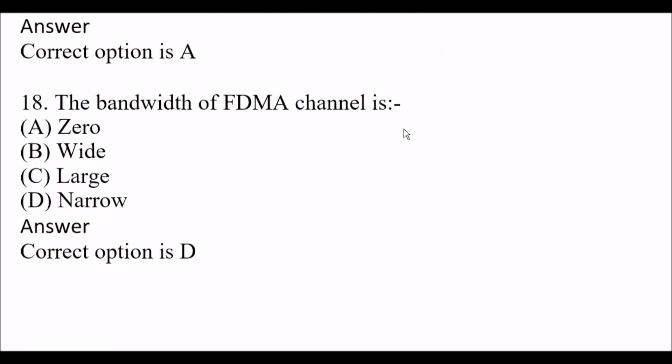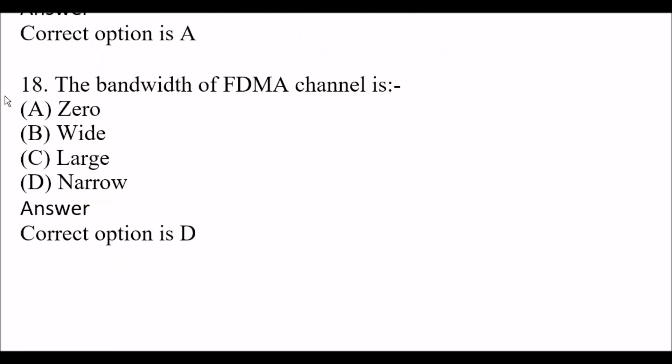Next question: The bandwidth of an FDMA channel is — Option A: zero. Option B: wide. Option C: large. Option D: narrow. The right answer is Option D, narrow. The bandwidth of an FDMA channel is narrow. Now let's wrap up this lecture. See you in the next video. Thanks for watching, and wishing you all the best for your examination.